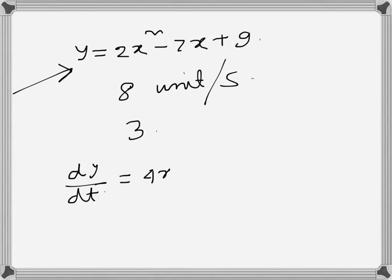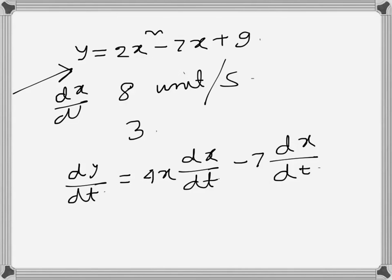This becomes 4x dx/dt minus 7 dx/dt. So here the rate of change of x is given as 8 units, so dx/dt is 8 units per second, and the value of x is 3.